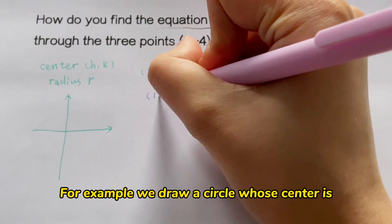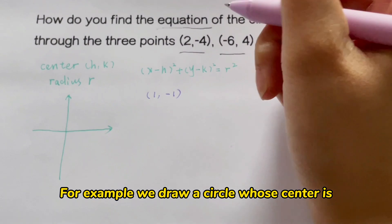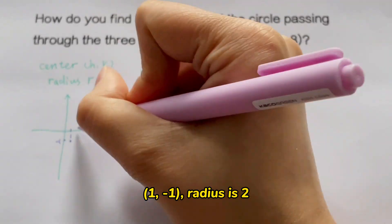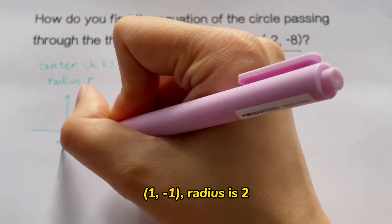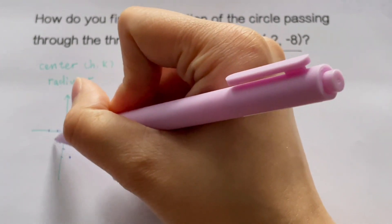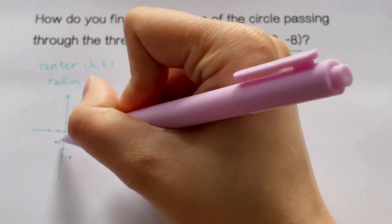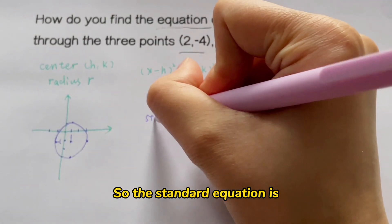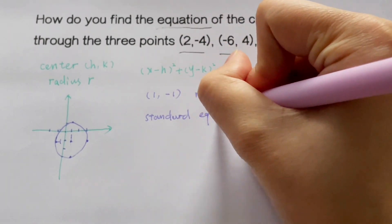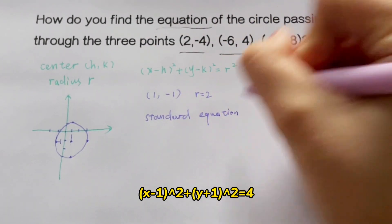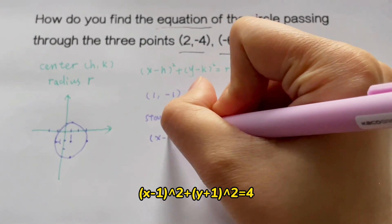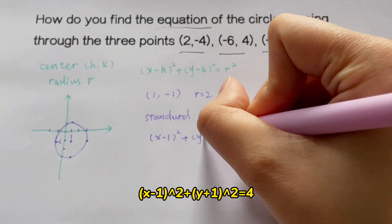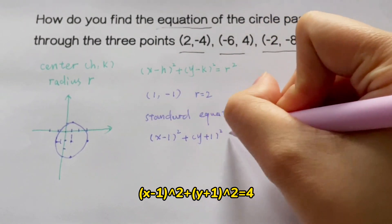For example, we draw a circle whose center is (1, -1) and radius is 2. So the standard equation is: x minus 1 squared plus y plus 1 squared is equal to 4.